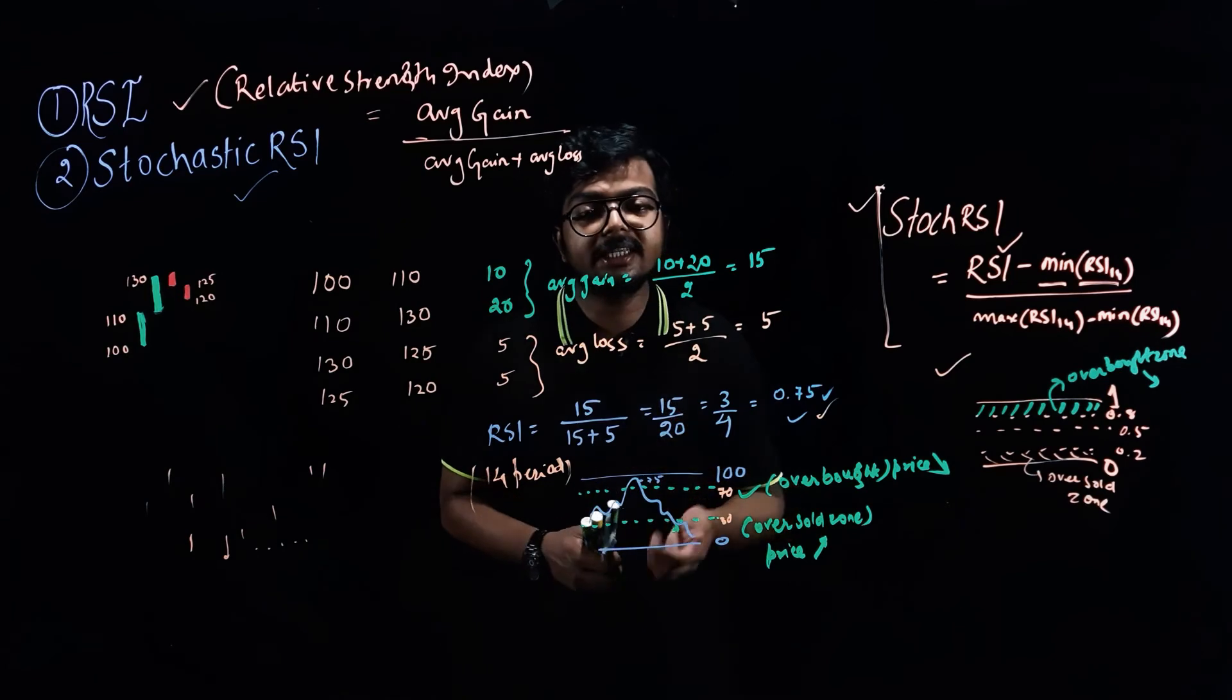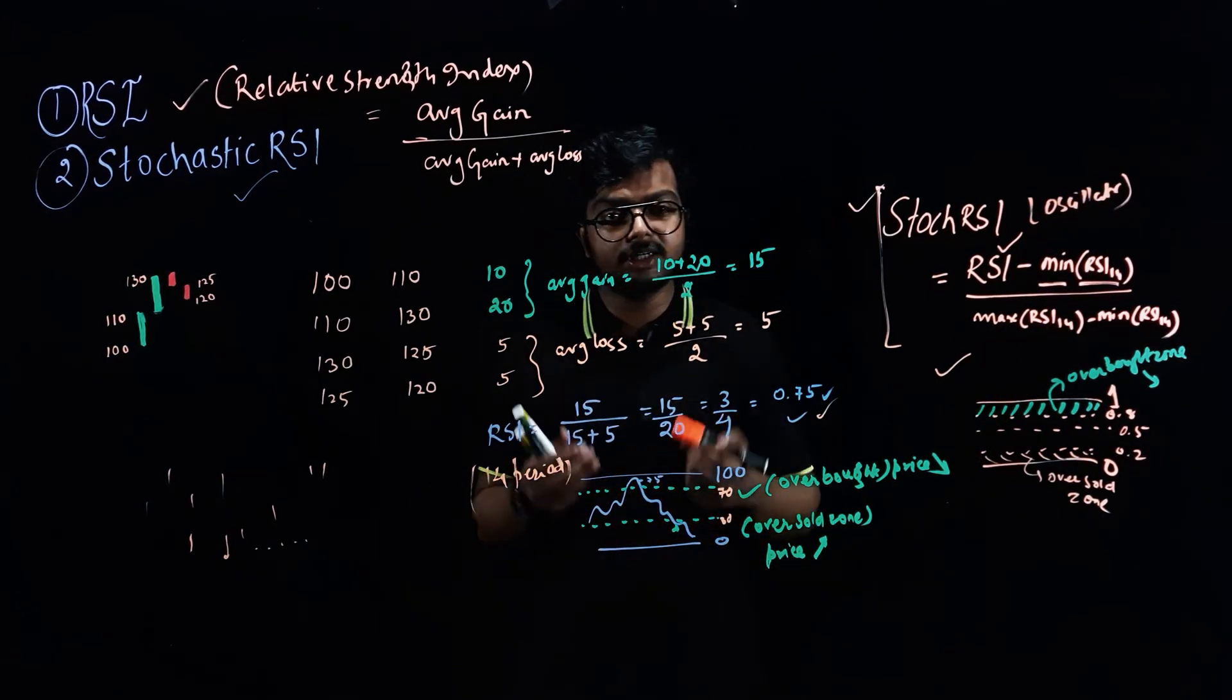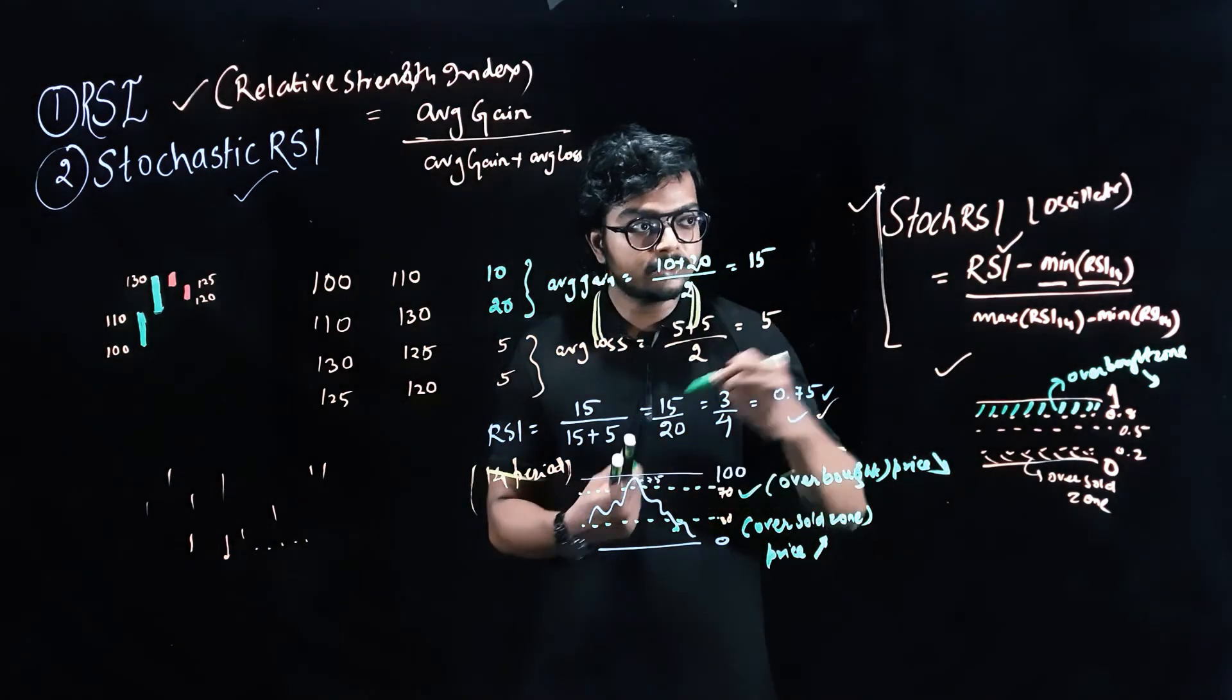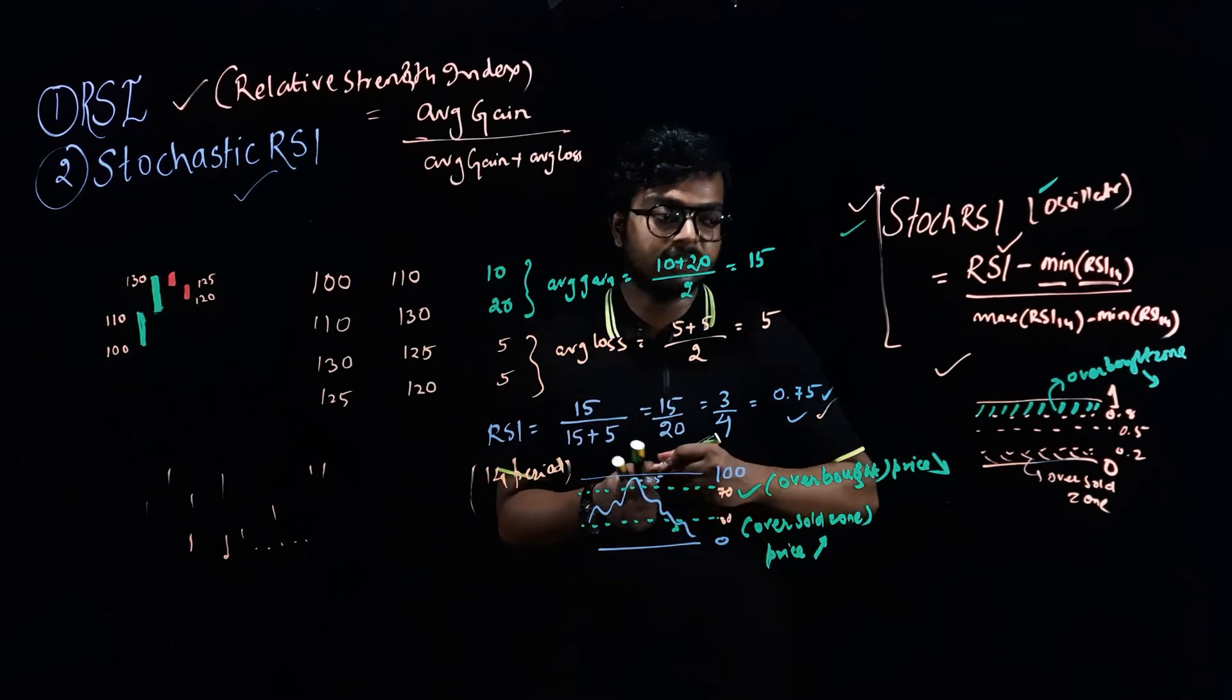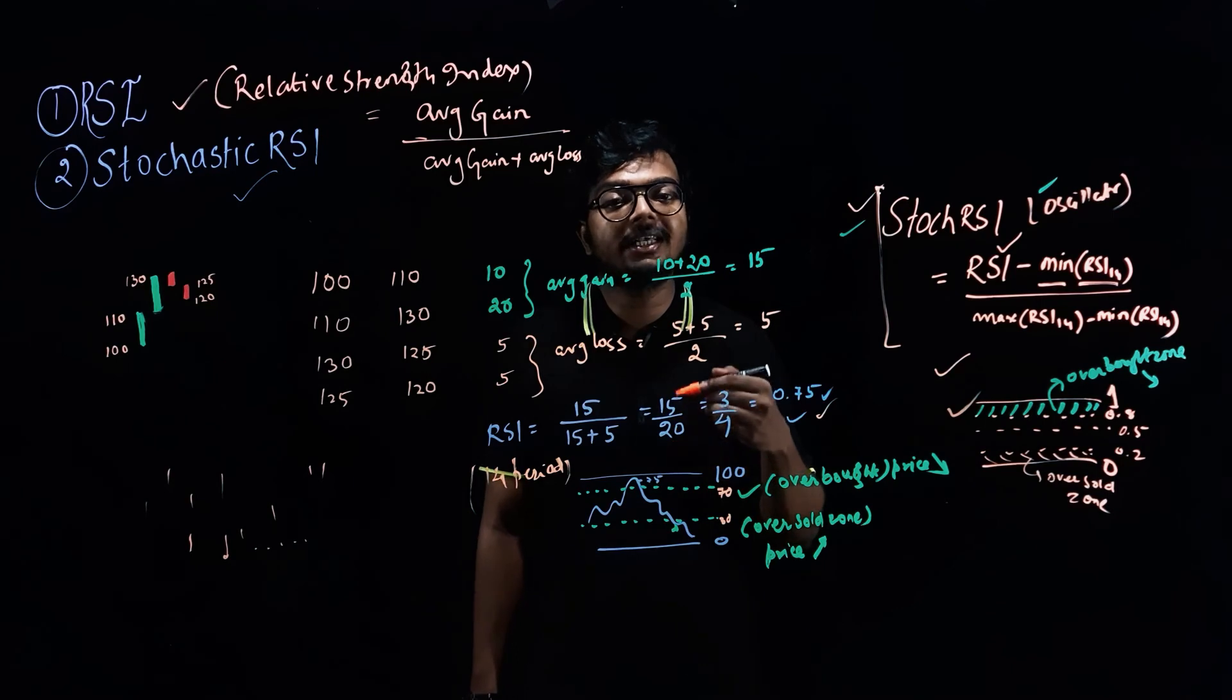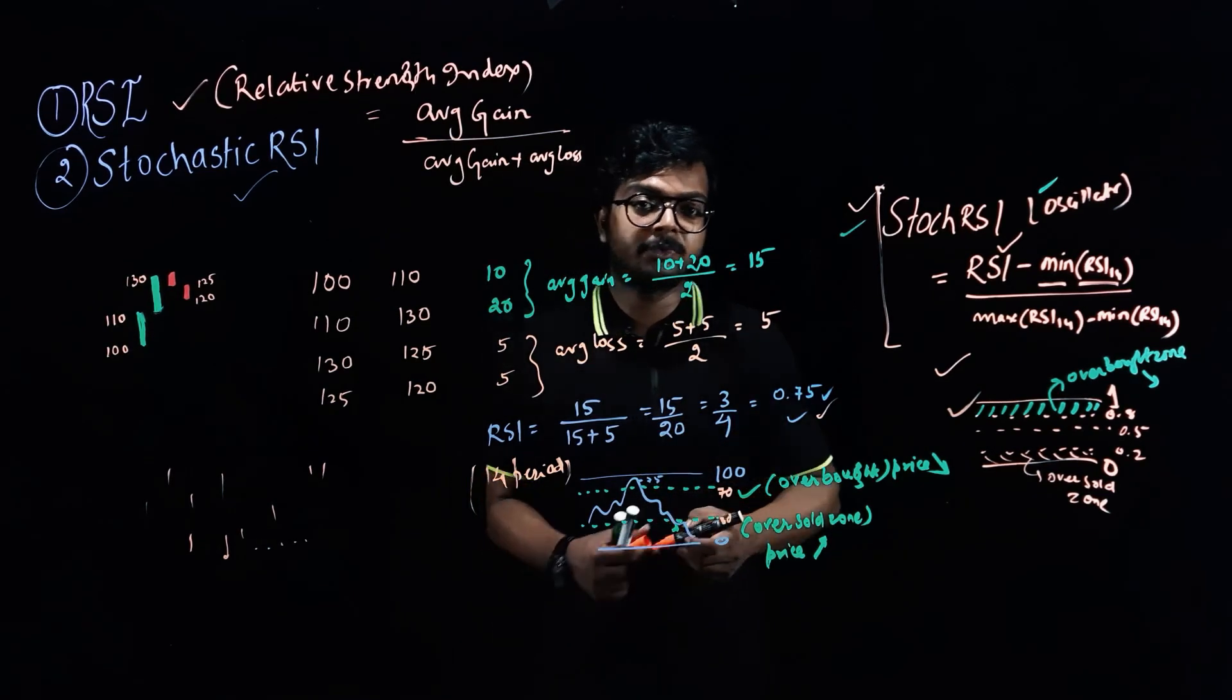So this Stochastic RSI is also used as an oscillator. Oscillator is generally used by traders to use it as a trading perspective. So you want to exit as soon as possible, right? So in this case you can use any oscillator. There are a lot of oscillators but Stochastic RSI is one of the very good oscillators. So you can use it as a trading tool. So above 0.8 it is an overbought zone so you can take a short position or you can sell, and below 0.2 it is in oversold zone so you can think of buying here.